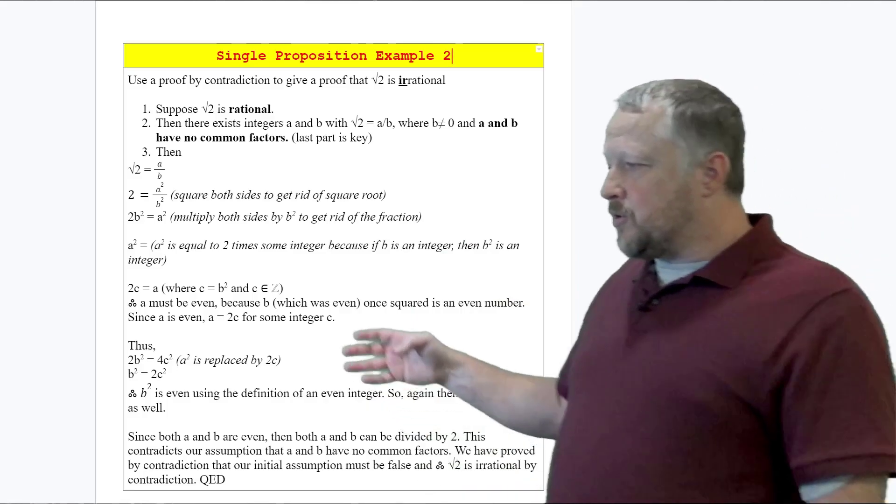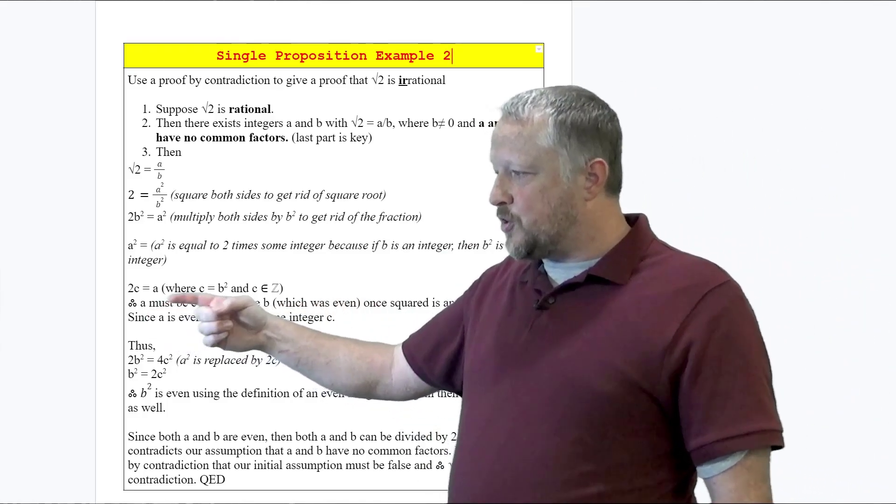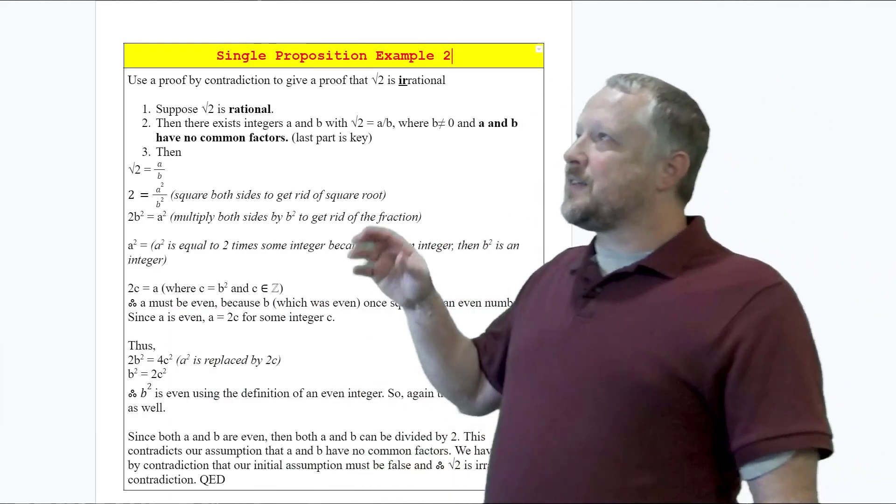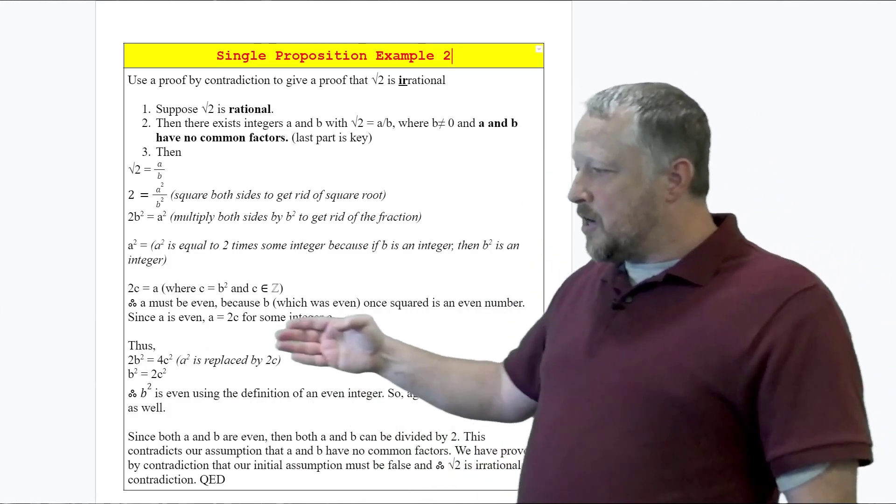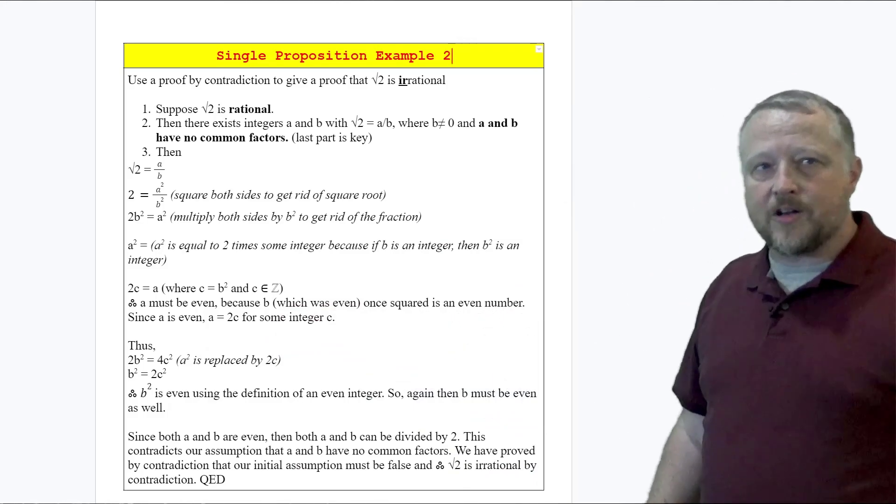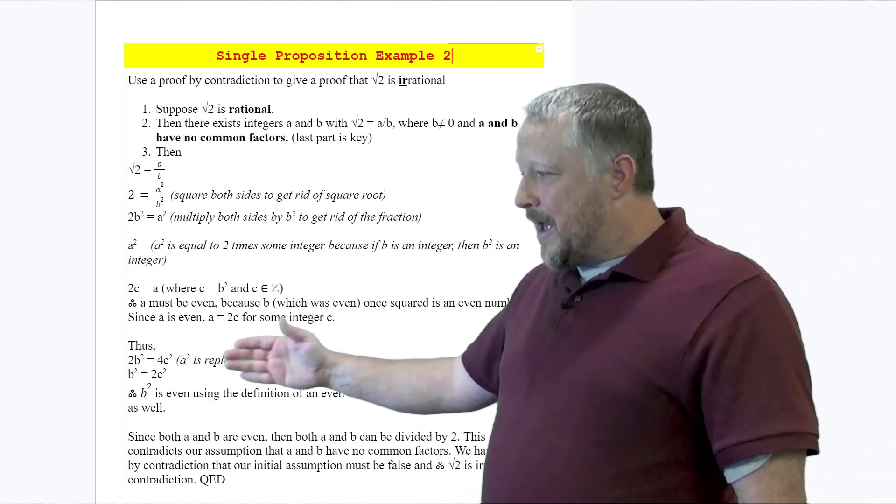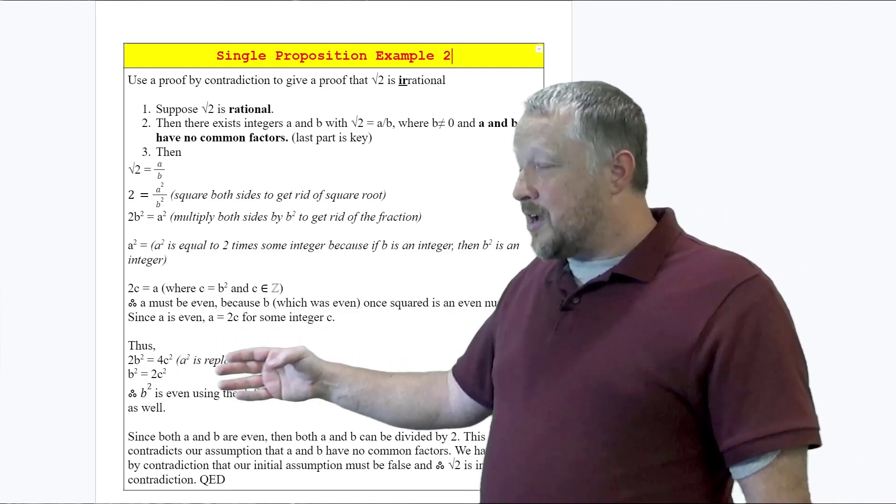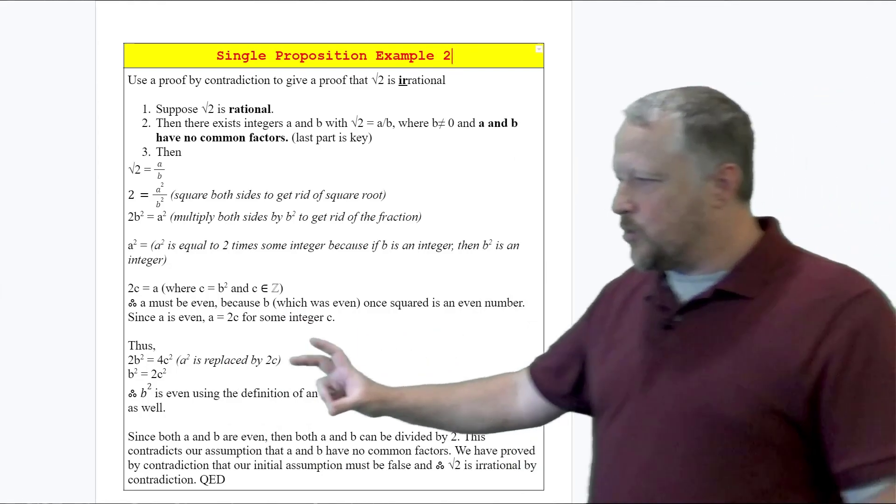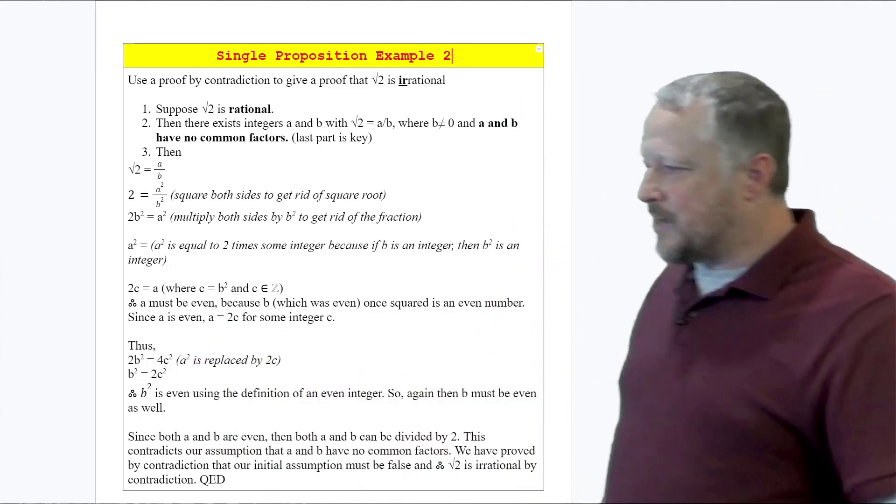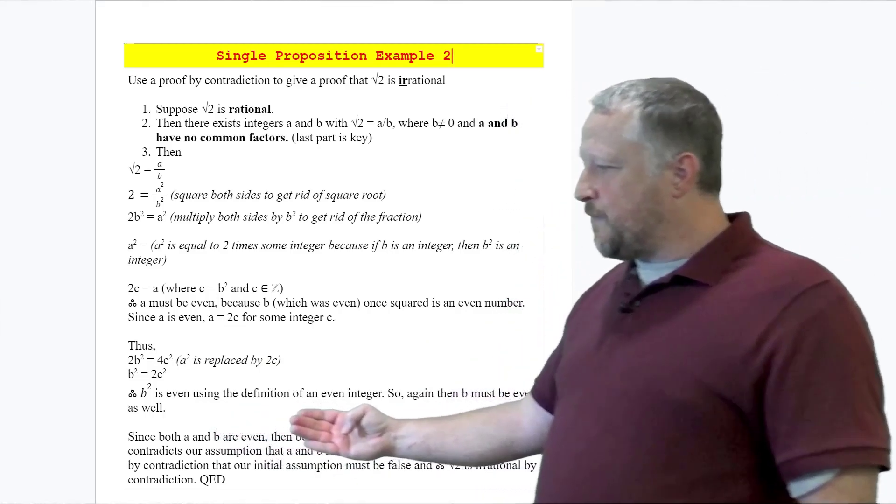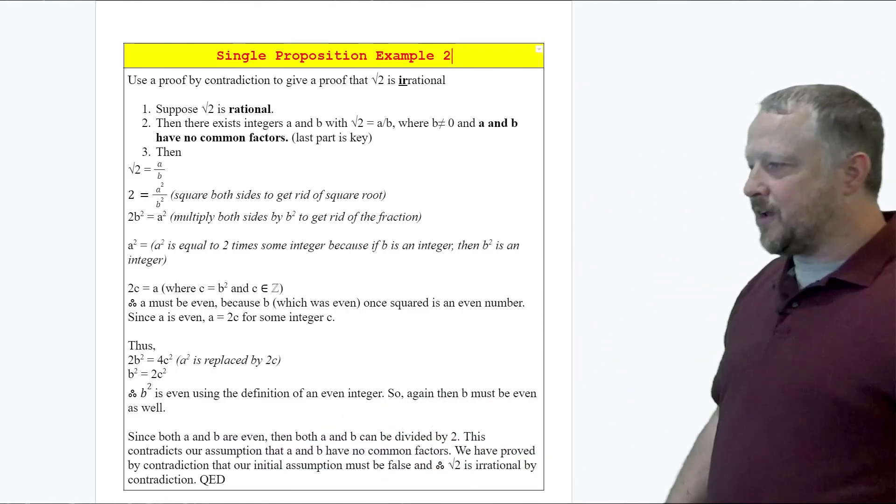Once we start doing substitutions, we have 2c = a where c is related to b². Since c is an element within integers, it must be even because b, which was even once squared, is again another even number. The same thing for when a = 2c. We're going to use that type of notation to find exactly the same thing for b². So b² is even using the definition of an even integer, so then b must be even as well.